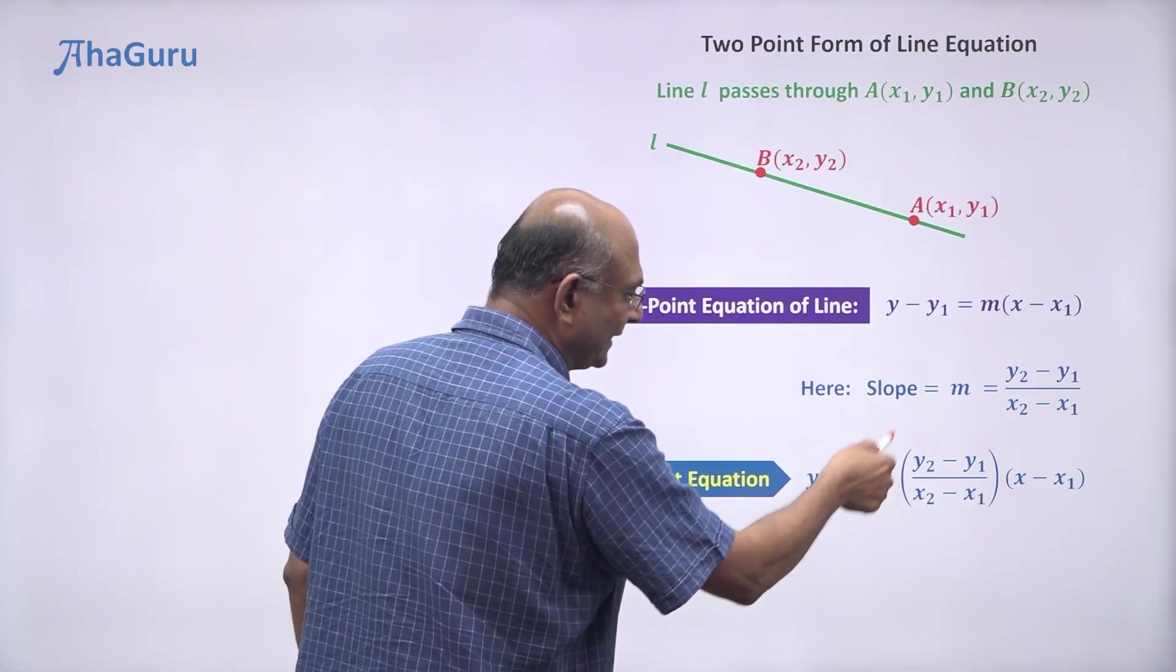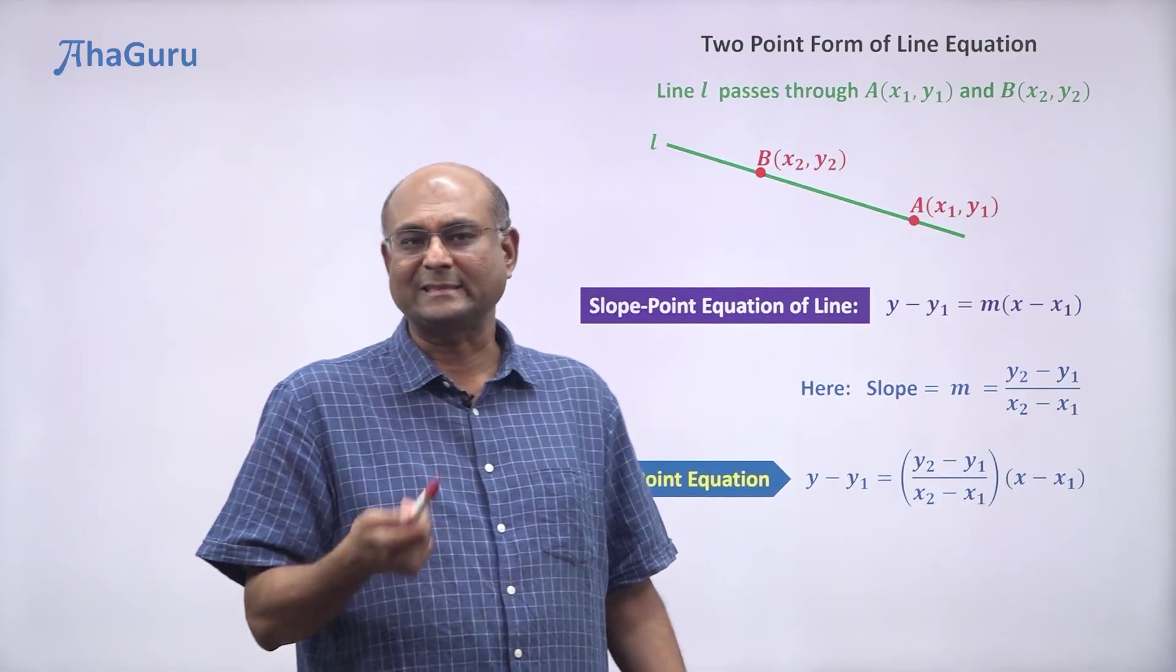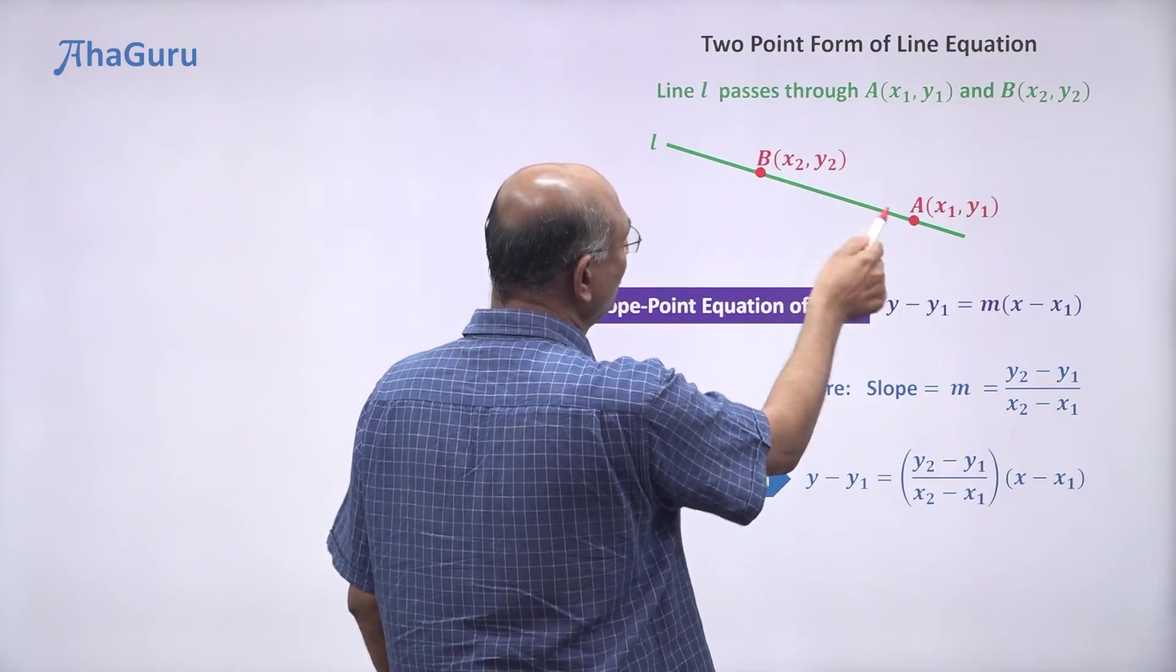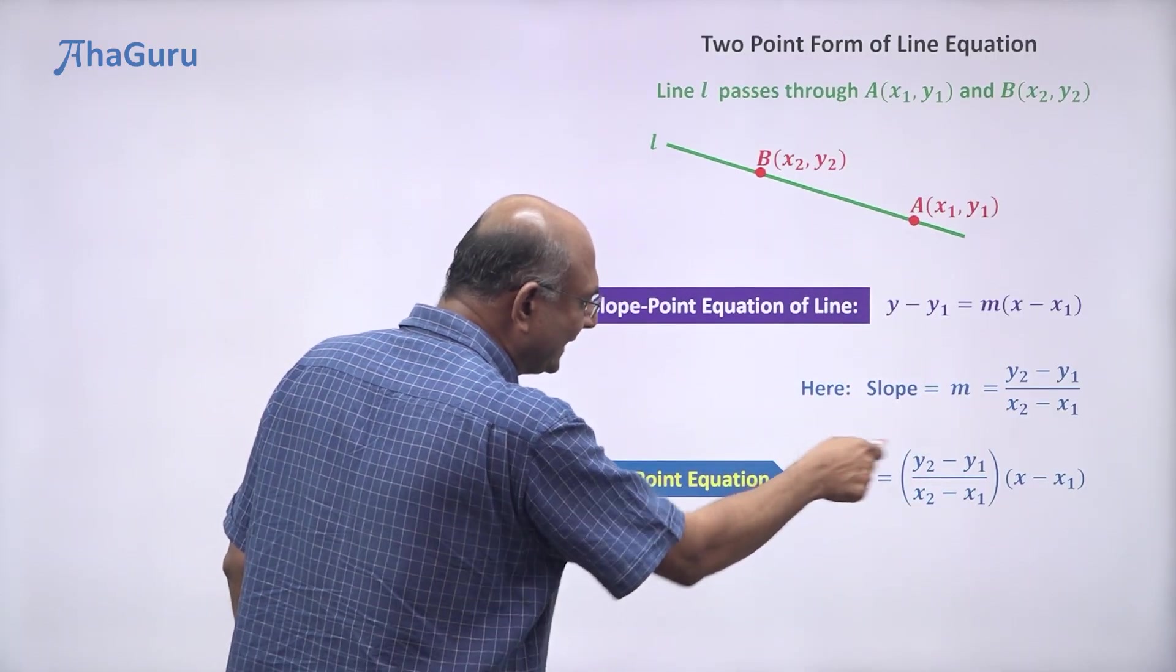That's all. So you're using this to find the value of m and writing the equation. It's nothing new really, it is the same as the earlier equation except now instead of giving you the value of m, you're given two points so you can find the value of m.